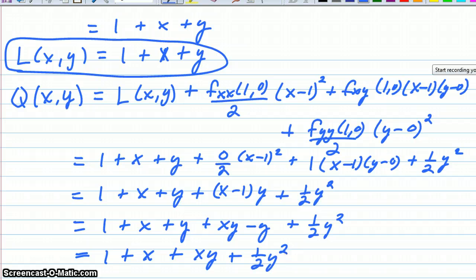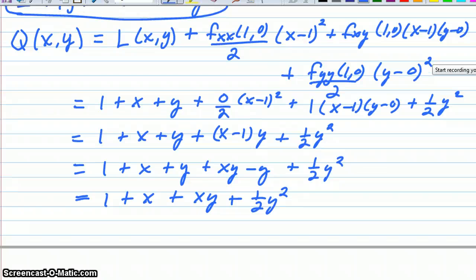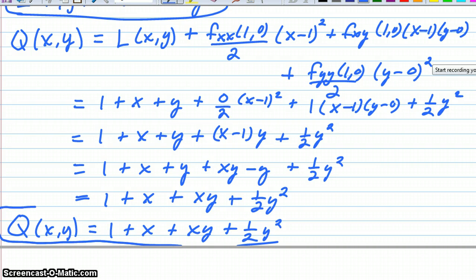And we get 1 plus x plus xy plus 1 half y squared. Just rewriting this a little bit, we can see here that the quadratic approximation Q(x,y) is equal to 1 plus x plus xy plus 1 half y squared. That's the second answer. Now what we'd like to do is to go into the applet and see that that actually verifies what we came up with here.